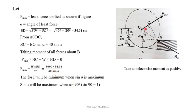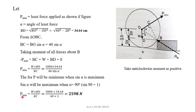Therefore, the angle alpha made by the minimum force with line OB will be equal to 90 degrees. So sin alpha equals 1. Substituting the values, P minimum equals 3000 into 34.64 divided by 40, giving approximately 2598 Newton.